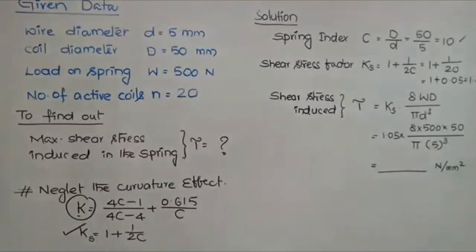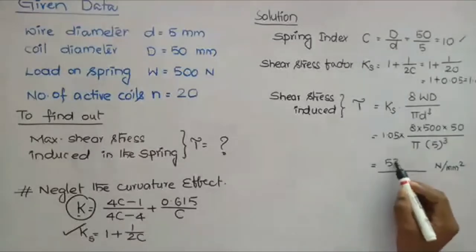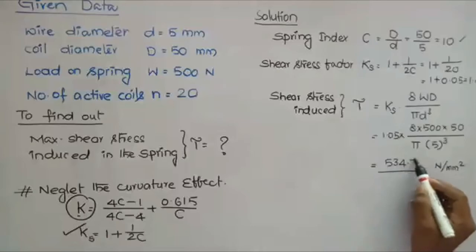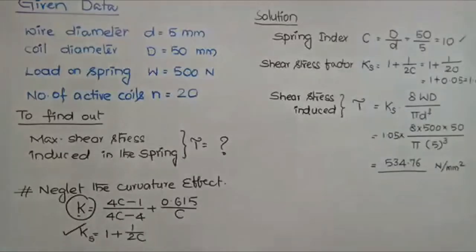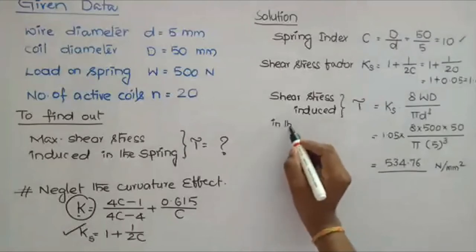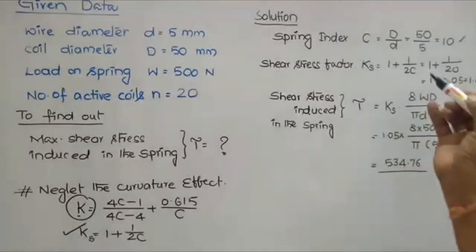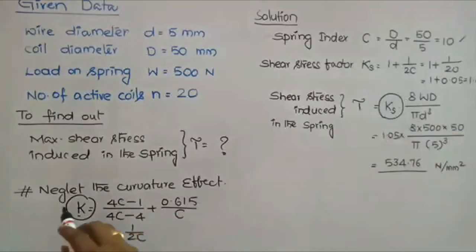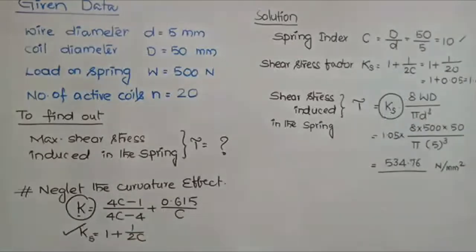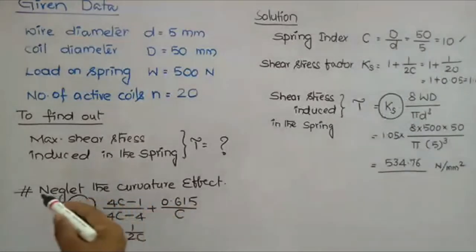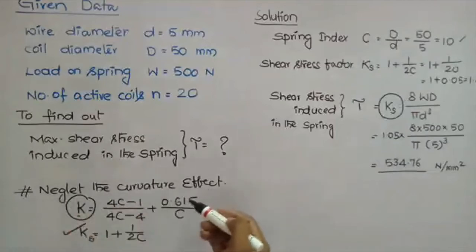The maximum shear stress is 534.76 Newton per mm squared. So this is how you calculate shear stress induced in the spring. If the curvature effect is taken into consideration, instead of Ks you use K, which is equal to (4C−1)/(4C−4) plus 0.615/C. Since it is given that curvature effect is neglected, that's why we used Ks instead of K.